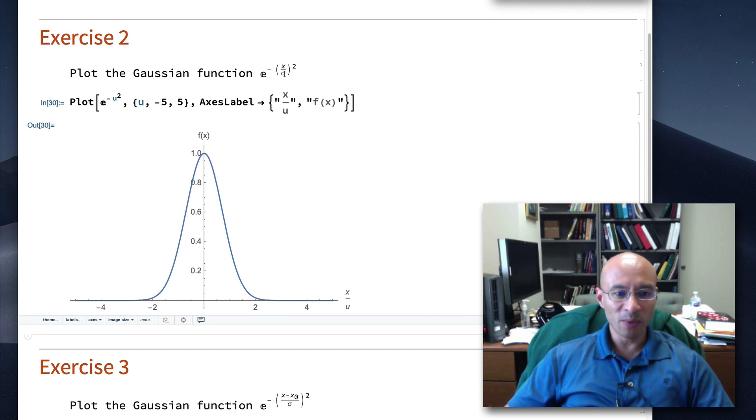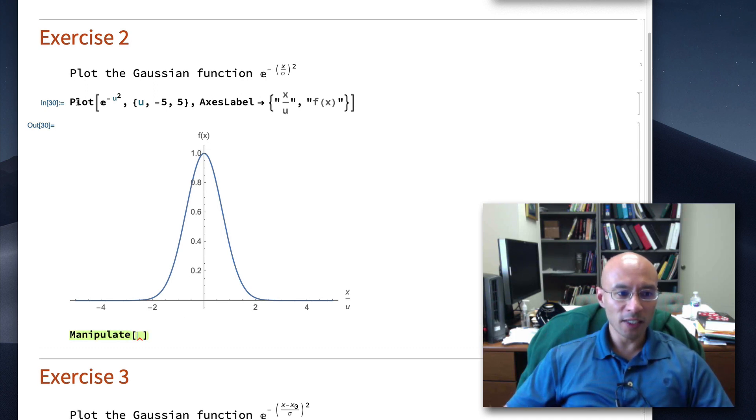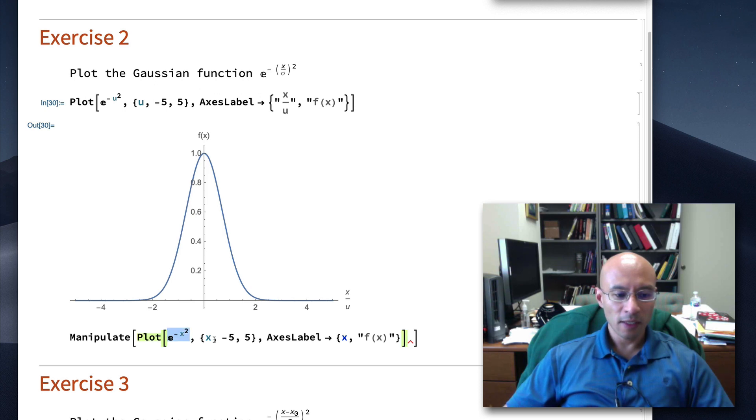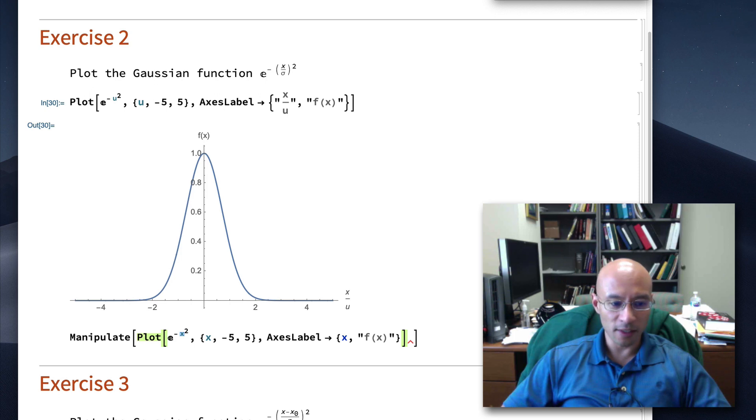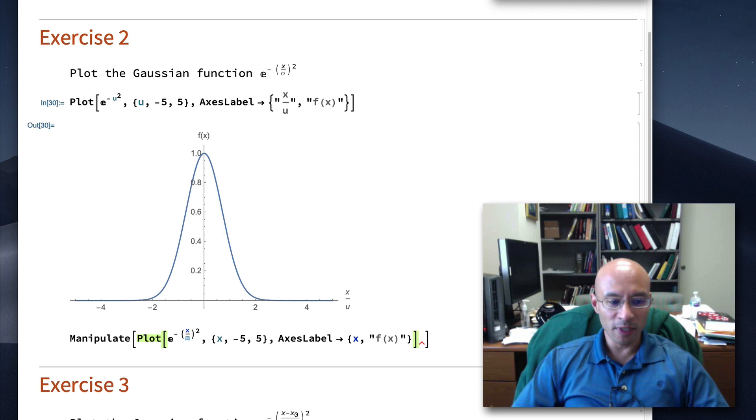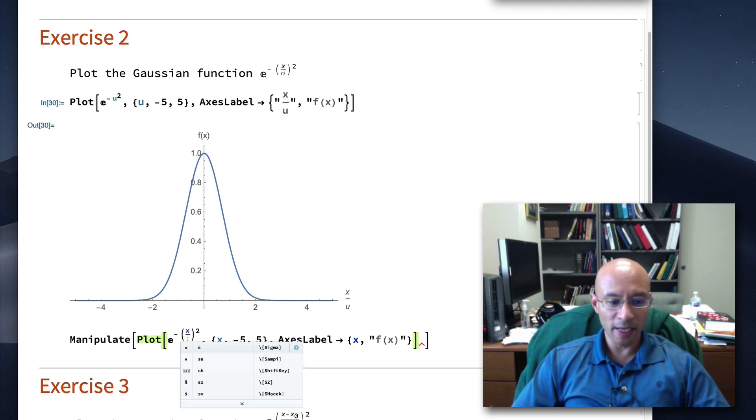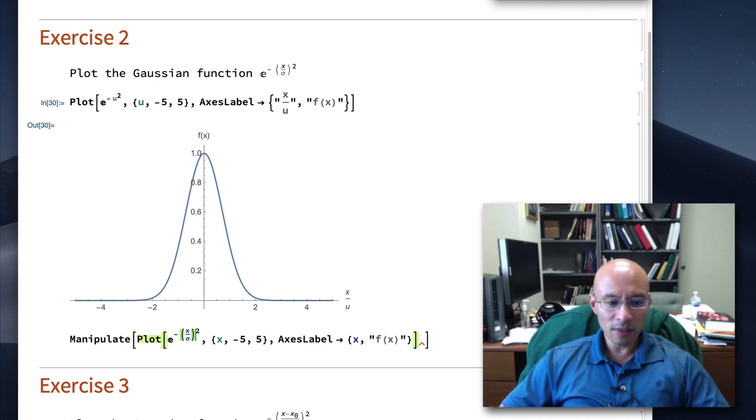But there's also another way. Maybe if you want to play with this parameter a little bit, we might want to use the manipulate command. To do this, I'm going to start with the manipulate command. And the first argument we're going to give it is a plot command. So I'm just going to paste the previous command that I copied in here. I have the exponential and then the range for X. Axes labels. Well, I'm just going to highlight this X here. As soon as I highlight it, I hit control, forward slash, and then I get this division. And now I've put in sigma. I type escape, S, and then escape. There's sigma.